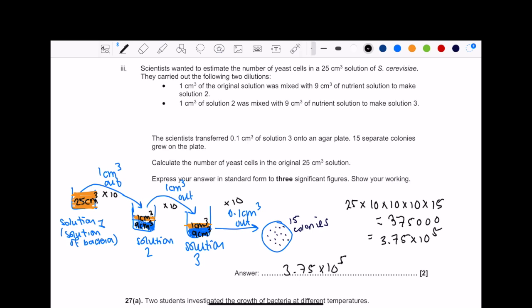Alright, first top tip, draw your diagrams. So let's go through and I'll show you where the diagrams come from. It says the number of yeast cells in 25 cm³ of solution has been carried out following two dilutions. So we're starting with 25 cm³ of bacteria, this is our starting point.